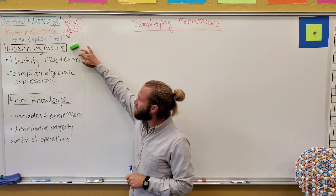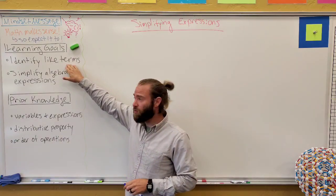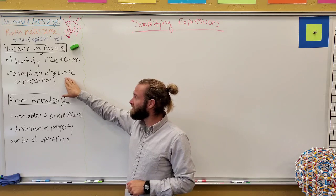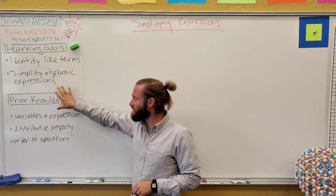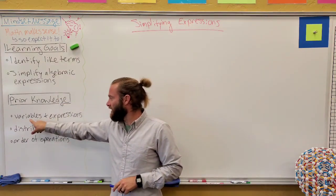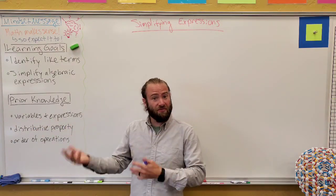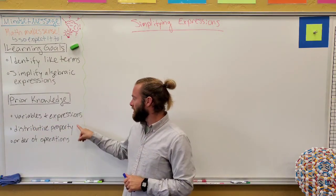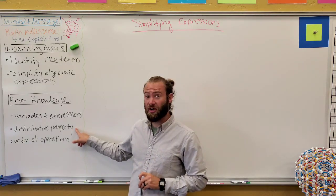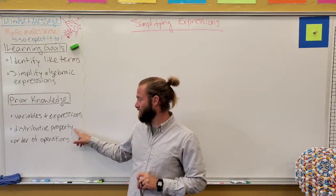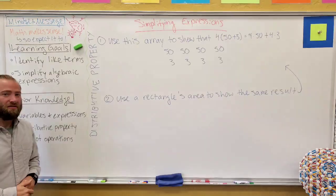Today's learning goals are: first, to identify what like terms are, and then to simplify algebraic expressions. Prior knowledge needed includes variables and expressions, the previous vocabulary we've learned, the distributive property — which we'll talk about more in our first example — and still the order of operations and number tricks.